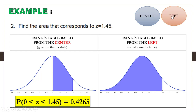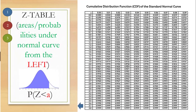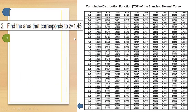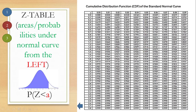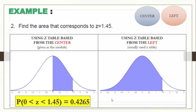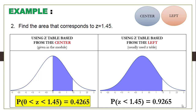Using the Z-Table based from the left for Z equal to 1.45: we locate 1.4 in the row and 5 in the column, and we get 0.9265. So the area corresponding to Z equal to 1.45 using the left-based Z-Table is 0.9265.